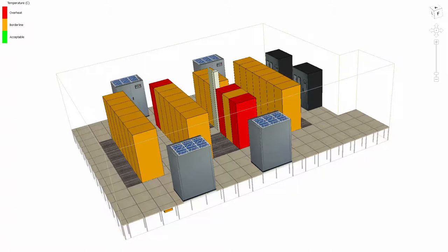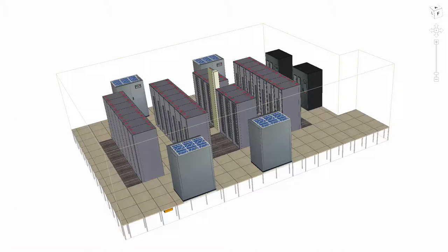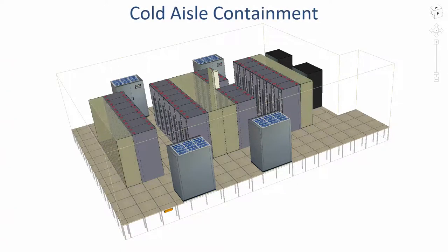One solution could be to set up hot or cold air containment systems. In the cold air contained system, partitions are built to enclose both the floor grills and the equipment inlets. This is done to guide cool air supplied through the floor grills directly to the IT equipment. This system also reduces the mixing of cool and exhaust air in the room, thereby improving the effectiveness of the cooling units.